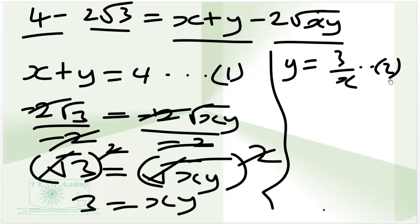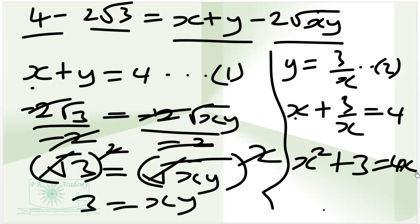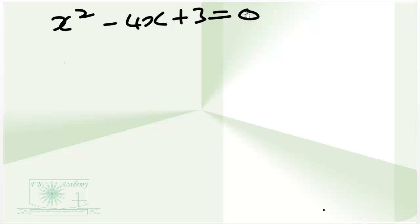Let's put the second equation into the first equation. That gives us x plus y, and y is now 3 over x, is equal to 4. When we multiply through by x, x times x gives us x squared plus 3 is equal to 4x. Writing this in quadratic form, we have x squared minus 4x plus 3 is equal to 0. We look for factors of 3 that when we add give us negative 4, and these factors are negative 3 and negative 1.